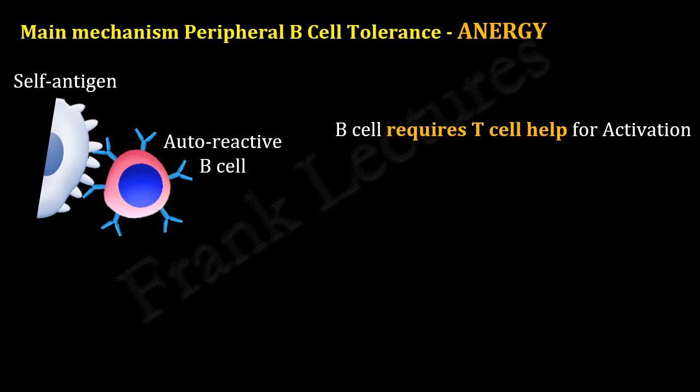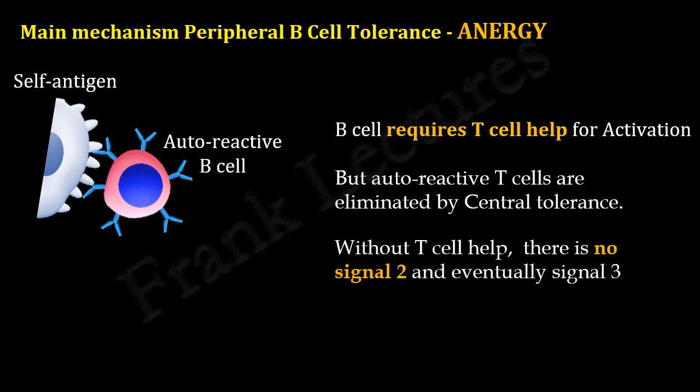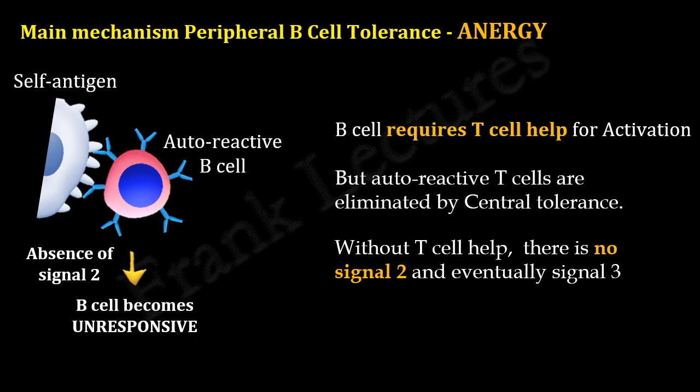But autoreactive T cells are also eliminated in central lymphoid organs by mechanisms of central tolerance. Therefore, without T cell help, such autoreactive B cells will not be able to receive the second signal and consequently the third signal for complete activation. In the absence of signal 2 and signal 3, autoreactive B cells become unresponsive — they become anergic.